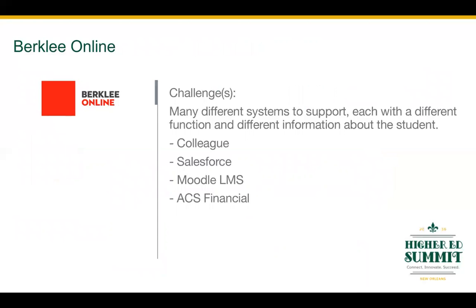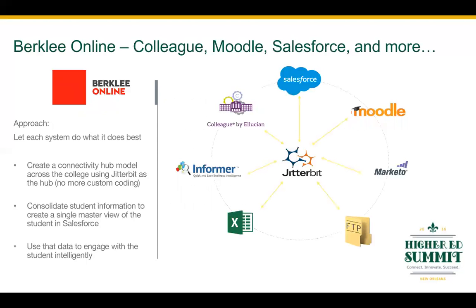First up, let's talk about Berklee Online. Berklee Online is the continuing education and distance learning arm of the Berklee School of Music. As you can imagine, the addition of an online program really increased the number of systems they needed to support and increased the requirements for connecting these systems. The team supports Ellucian Colleague, Moodle LMS, ACS which is a financial system, and Salesforce. Each of these applications specializes in something the others do not, so the Berklee team is not looking to replace all of their applications, but rather go with a best-of-breed model.